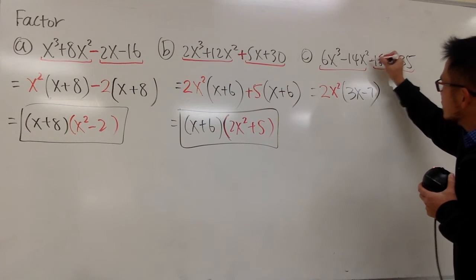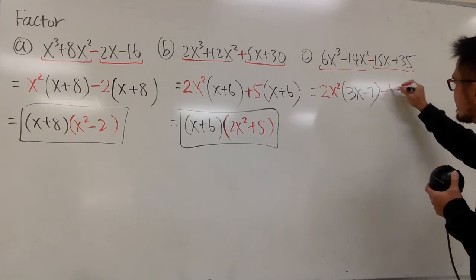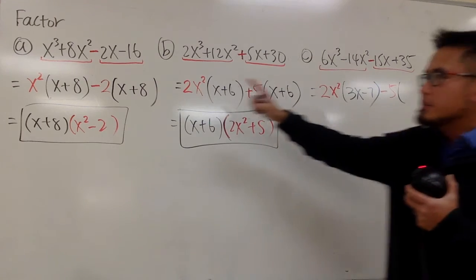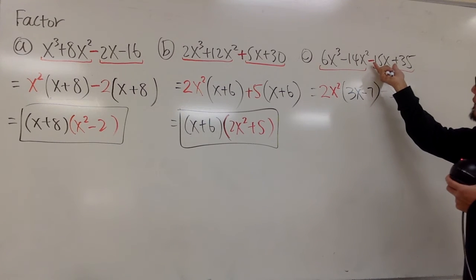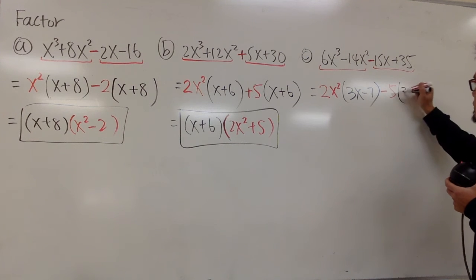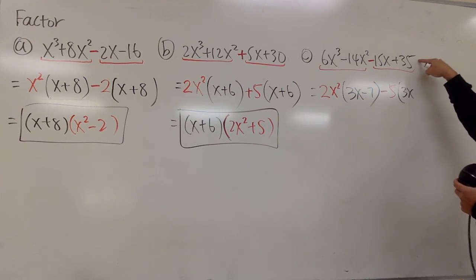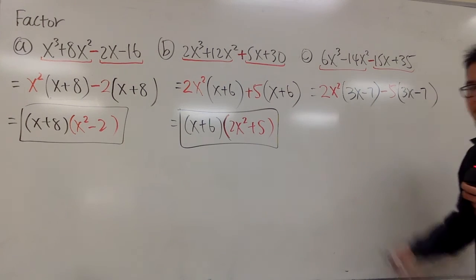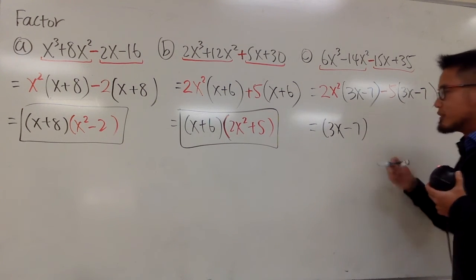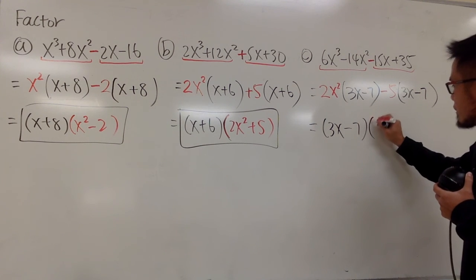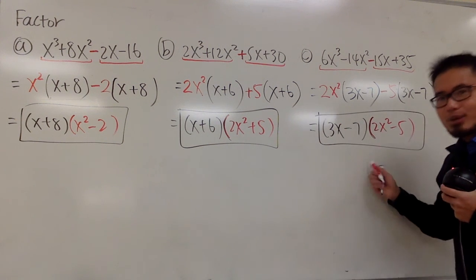We have a minus in between, so let's bring that down right away. Looking at 15 and 35, we can factor out a 5 — but this is the same situation as the first example: we are factoring out a negative 5. Negative 15x divided by negative 5 gives positive 3x. Positive 35 divided by negative 5 gives minus 7. You can see both groups share the same parenthesis 3x minus 7. If they are different we cannot factor anything out, but usually when you are given a factoring question, the parentheses will be the same. So we factor out 3x minus 7 and we are done.